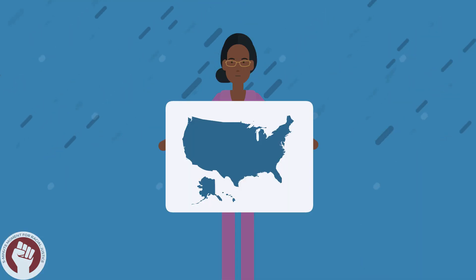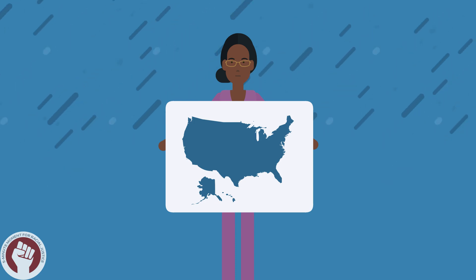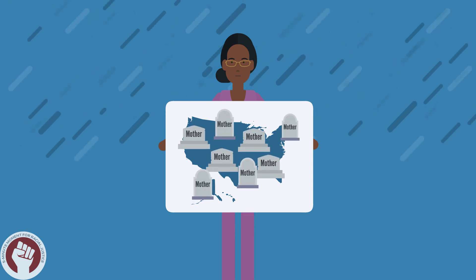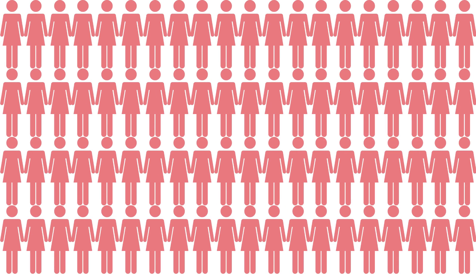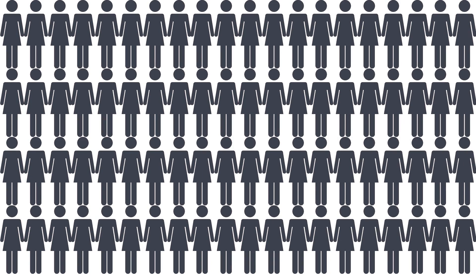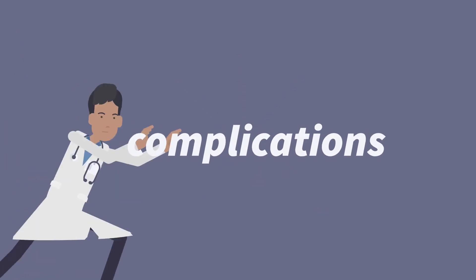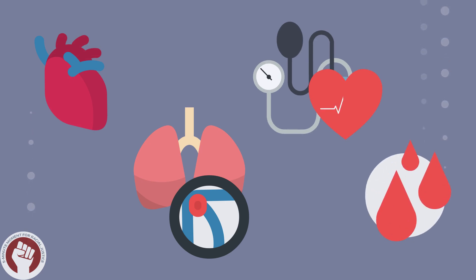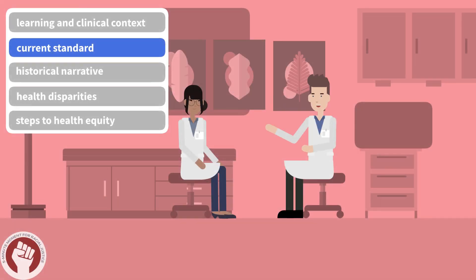The United States has the highest maternal mortality rate among developed countries, and this rate has doubled over the past 20 years. Approximately 700 women die in the U.S. each year from pregnancy-related complications, and the majority of these cases are felt to be preventable. The most common causes for pregnancy-related deaths are due to heart failure, pulmonary embolism, hypertension, and hemorrhage.